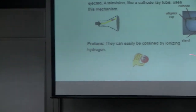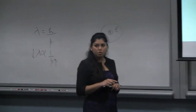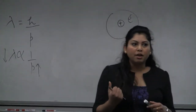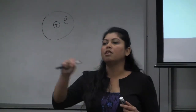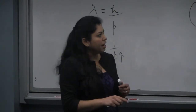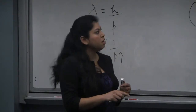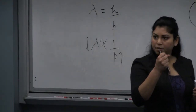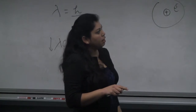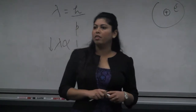A cathode ray tube consists of a glass tube with vacuum inside. On the left there is a filament, and when hot it acts like an electron gun — it emits electrons. A potential difference is applied across the tube: the left end (cathode) is negative and the right end (anode) is positive. The cathode is an electron emitter and the anode is the electron collector. When the filament is hot, the cathode emits electrons and they are accelerated towards the anode. A cathode ray tube is an example of a small charged particle accelerator.